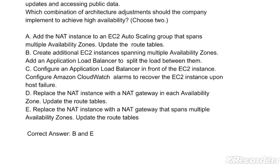Options: A) Add the NAT instance to an EC2 Auto Scaling group that spans multiple Availability Zones and update the route tables. B) Create additional EC2 instances spanning multiple Availability Zones and add an Application Load Balancer to split the load between them. C) Configure an Application Load Balancer in front of the EC2 instance and configure Amazon CloudWatch alarms to recover the EC2 instance upon host failure. D) Replace the NAT instance with a NAT Gateway in each Availability Zone and update the route tables.